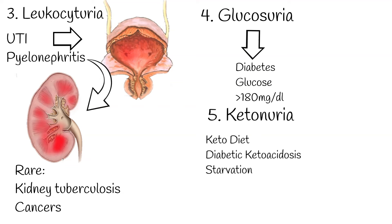Another notable cause is uncontrolled diabetes, especially in cases of diabetic ketoacidosis, DKA. DKA represents a severe and potentially fatal cause of ketonuria. Predominantly seen in type 1 diabetics, it manifests when there's an inadequate insulin supply, forcing the body to resort to fat metabolism, culminating in ketone accumulation and potential acidosis.